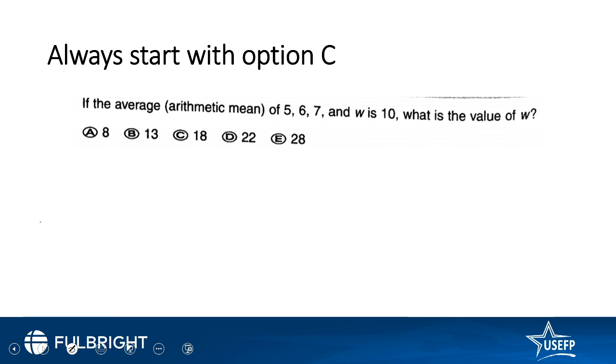So if the average mean of 5, 6, 7, and W is 10, what is the value of W? Let's suppose it is 18. If you take the average of 5 plus 6 plus 7 and 18, so 11 plus 7 is 18, 18 plus 18 is 36, average comes out to be 9.